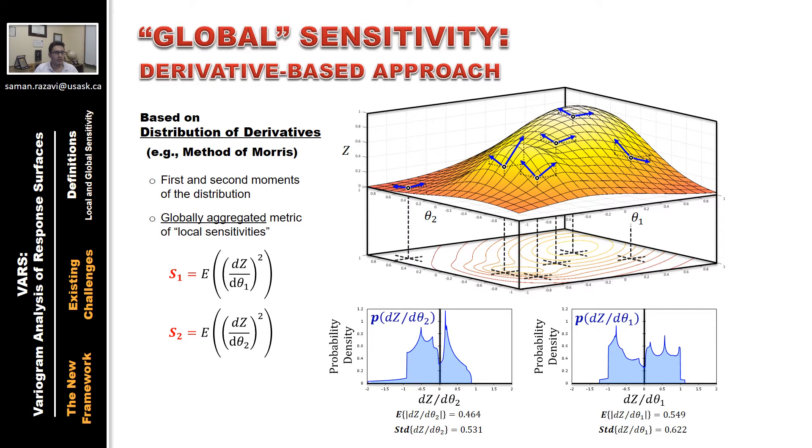One problem with such an approach is that these PDFs, even for this simple function, are quite complex, and the first two moments may not sufficiently describe what we are looking for. The distribution functions shown here are the actual PDF functions for the derivatives of this response surface.